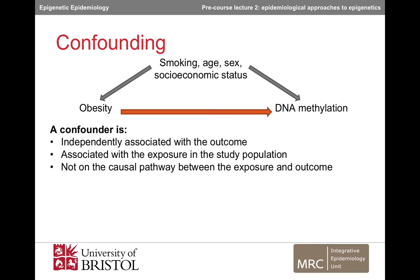So firstly, confounding. In this example, we're interested in whether obesity — the exposure — causes variation in DNA methylation — the outcome. Confounders are factors that are associated with both the exposure and the outcome, but not on the causal pathway between the two. In our example, the confounders are smoking, age, sex, and socioeconomic status. If we look at the association between obesity and DNA methylation without taking these confounders into account, we risk over- or underestimating the effect. We know that smoking causes changes to DNA methylation, and we know that smokers are less likely to be obese. So if we see an association between obesity and DNA methylation, it could be explained, at least partly, by smoking.